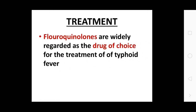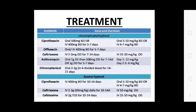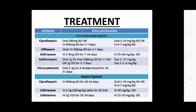Treatment: fluoroquinolones are widely regarded as the drug of choice for typhoid fever. For seriously ill patients, hydrocortisone 100 mg daily for 2–4 days may be given. Other drugs used include Ampicillin, Amoxicillin, Trimethoprim, Sulfamethoxazole, Ciprofloxacin, Ofloxacin, Ceftriaxone, Azithromycin, and Chloramphenicol, chosen according to the severity of symptoms.